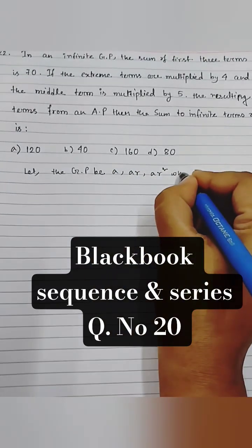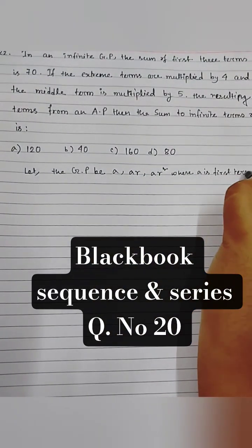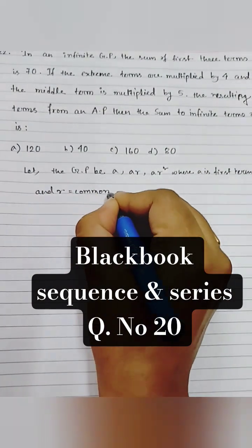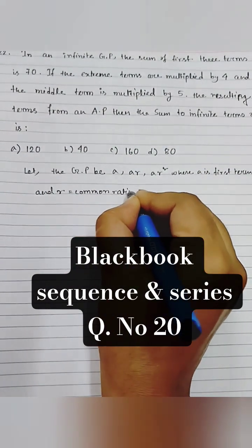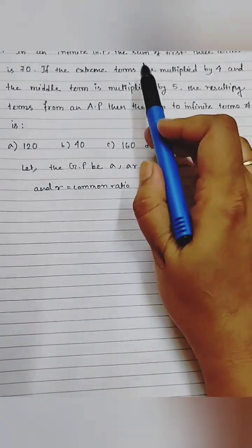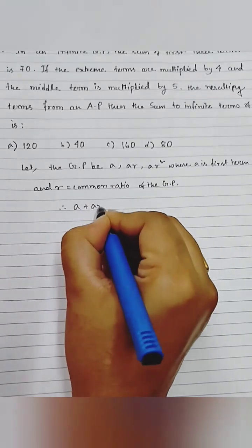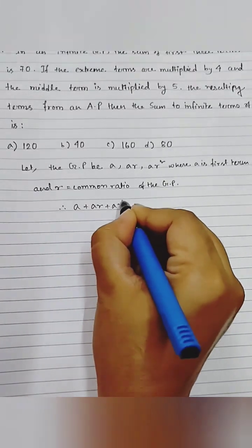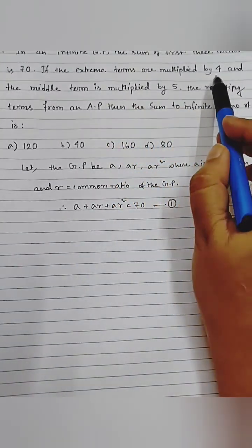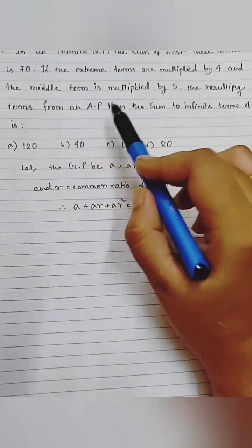The three terms of a GP are a, ar, and ar², where a is the first term and r is the common ratio. The condition given is that the sum of the first three terms is 70, so a plus ar plus ar² equals 70. Also, if the extreme terms are multiplied by four and the middle term is multiplied by five, the resulting terms form an AP.